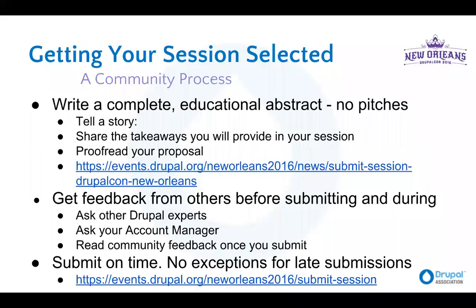As you're writing, you want to make sure you're telling a story that will resonate with your audience. You definitely don't want to do pitches — if you're a software vendor or hosting company, don't just talk about your software. You want to say: what is the problem and what is the solution? Tell it as a story, and make sure you're clear in your abstract about who the session is for — is it a technical audience or a beginner? What are the takeaways? What are they going to learn? And make sure it's proofread — quality matters. There are a few other tips at the link I've provided.